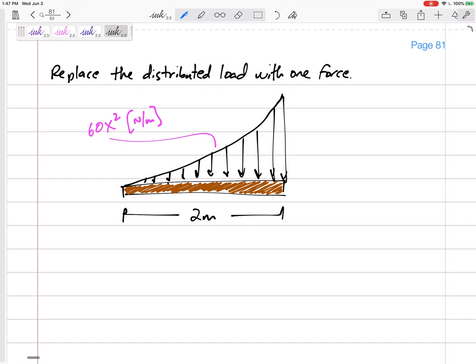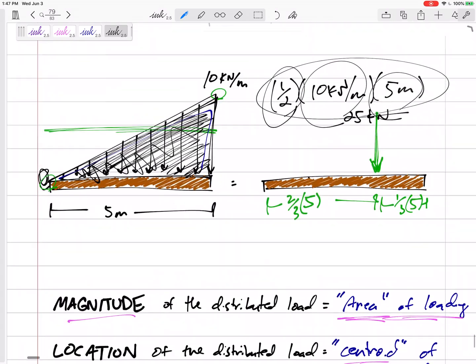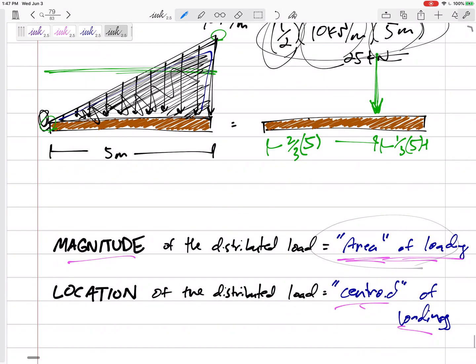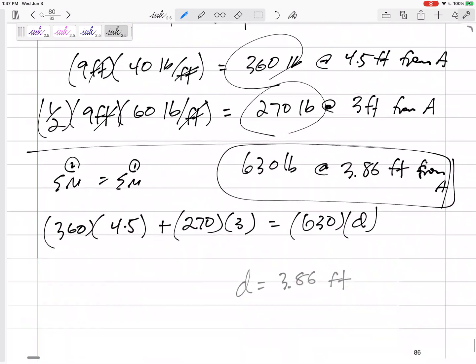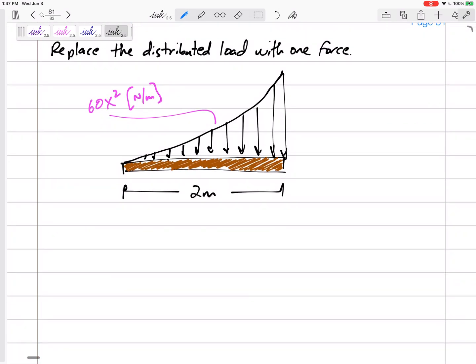Well, the magnitude, what did we learn? The magnitude is the area of the loading, the location would be the centroid of the loading. So if we could, what is this shape? It's not a triangle, it's not a rectangle, how can I get the area of this shape? If I know the curve, and the curve is a function, how can I get the area right here, this area under the curve? How do you get the area under the curve of a function? The integral.